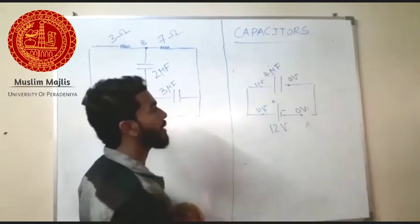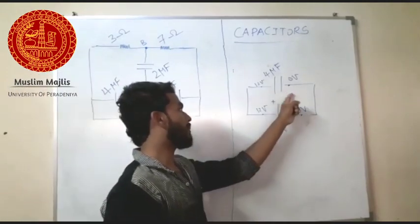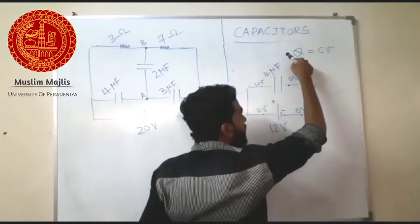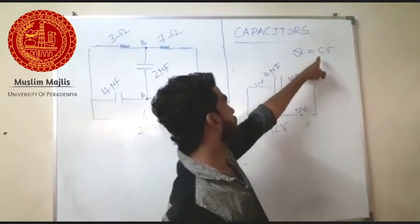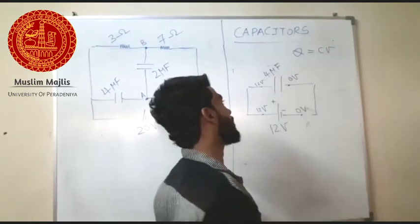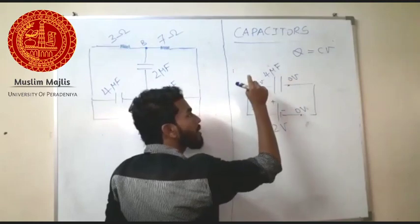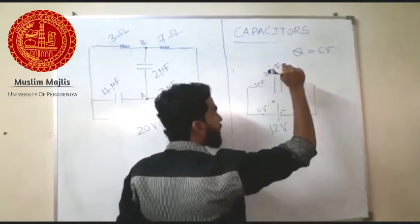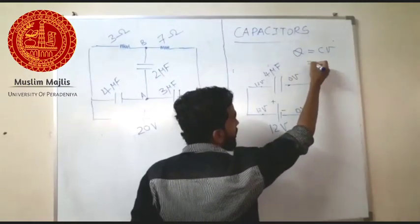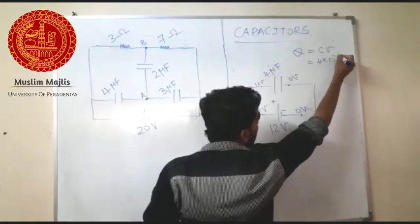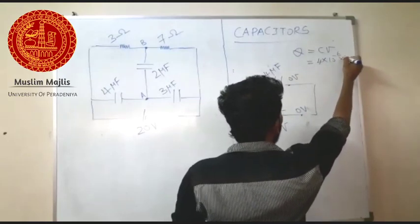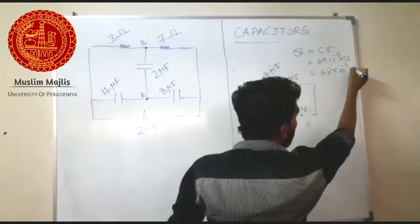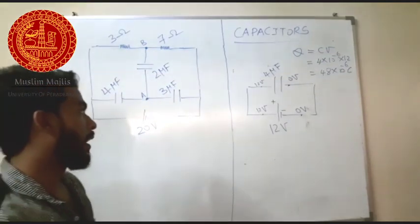The capacitor is placed between the 12V and zero nodes, so the voltage difference across the capacitor is 12V. We use the equation Q = C × V, where Q is the charge stored in the capacitor, C is the capacitance, and V is the voltage difference across the capacitor — that is, 12 minus 0 = 12. So Q = 4 microfarad × 12 = 48 microcoulombs. The unit for charge is coulombs.